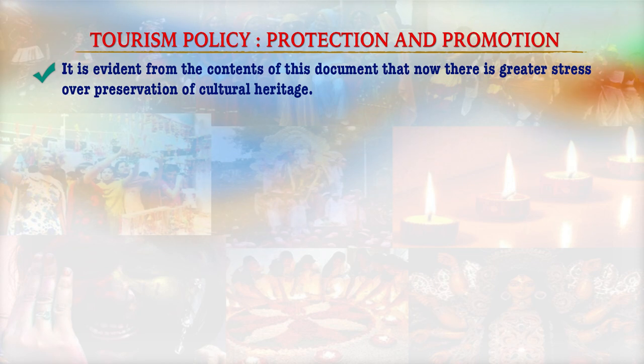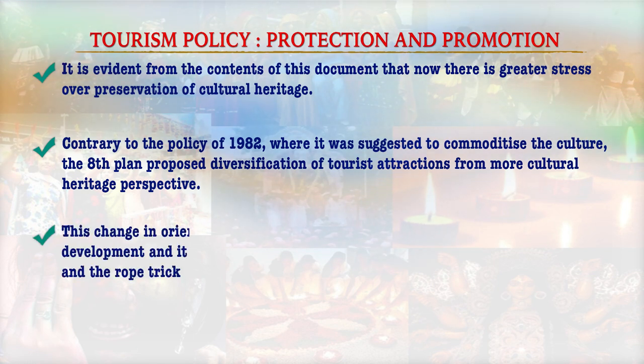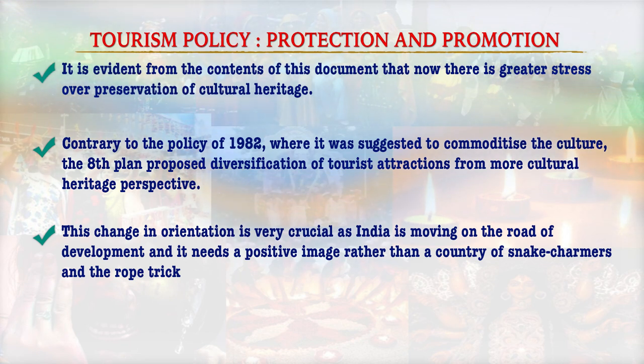The 8th Plan document makes a special mention that future expansion of tourism should be achieved mainly through private sector participation. Key areas in the plan include: development of selected tourist places; diversification from cultural-related tourism to holiday and leisure tourism; development of trekking, winter sports, wildlife and beach/sea resort tourism; exploring new source markets; restoration of national heritage products; and launching of national image building. The 8th Plan proposed diversification of tourist attractions from a cultural heritage perspective, as India needed a positive image rather than a country of snake charmers and the rope trick.